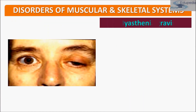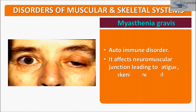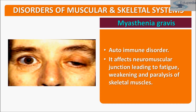The second disorder is Myasthenia Gravis. Myasthenia Gravis is an autoimmune disorder that affects the neuromuscular junction, leading to fatigue or tiredness, weakening, and paralysis of the skeletal muscle. It is a very rare chronic autoimmune disease marked by muscular weakness without atrophy, caused by a defect in the action of acetylcholine at the neuromuscular junction.